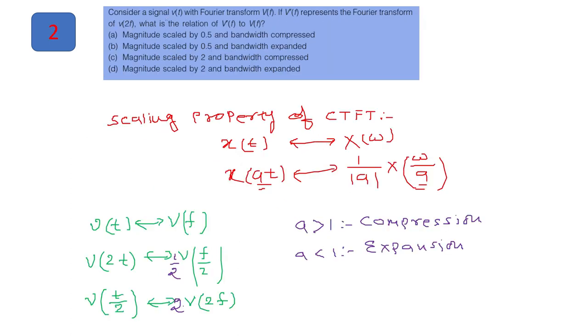Now in question number two, a signal V of T is given with the Fourier transform V of F and V dash F represents the Fourier transform of V2 of T, it should be V2 of T. What is the relation between V dash F and VF? So here we will use CTFT, continuous time Fourier transform scaling property which says that x of T, if your signal has a Fourier transform, then x of omega, then x of AT will be having 1 by mod A, x of omega. So from the given question, we can write this, V of T, this is given by V of F will be the Fourier.